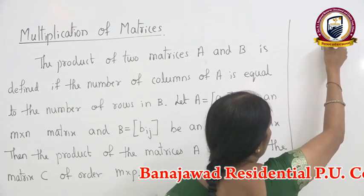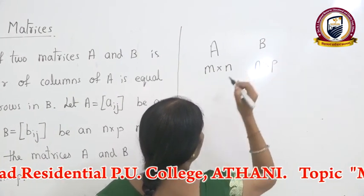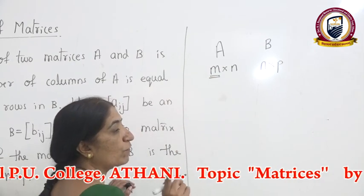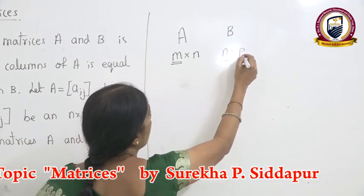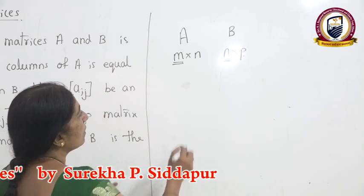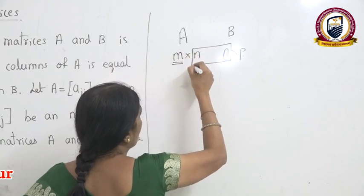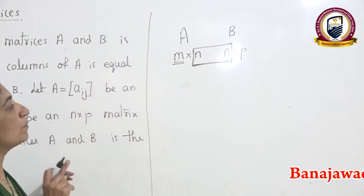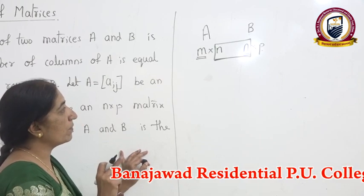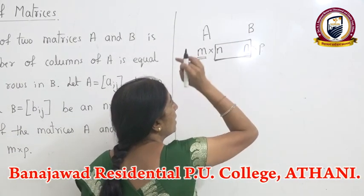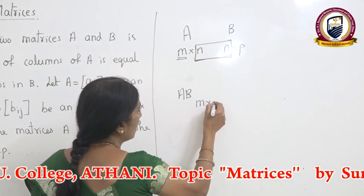Suppose you have matrix A of order M by N, and B is a matrix of order N by P. M is the number of rows and N is the number of columns. Here, N is also the number of rows in B and P is the number of columns in B. When multiplying two matrices, the number of columns in matrix A must equal the number of rows in matrix B. Then only you can multiply A and B, and the resulting matrix has order M by P.